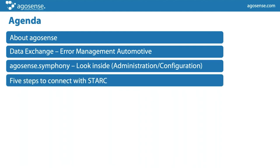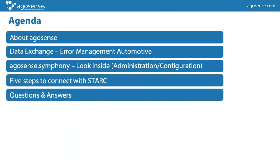The agenda looks like you can see on the screen. We will talk a little bit about AgroSense, then go into the details of data exchange — especially error management in the automotive world — and how Symphony can help you with that. Then we'll talk about how you as a potential new customer can start with AgroSense to directly connect your projects with the new Stark platform at Daimler.